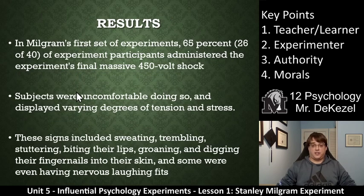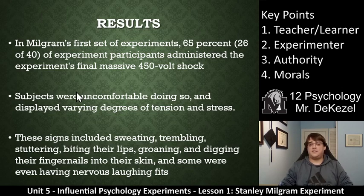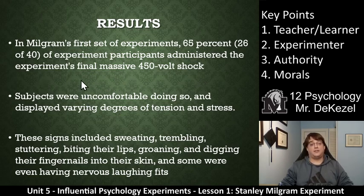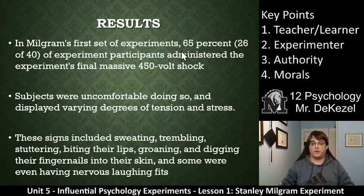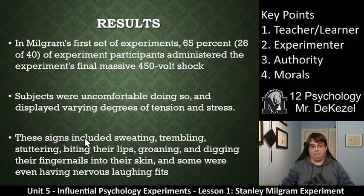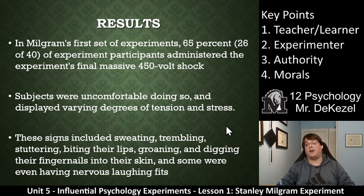So the results — what actually came of this? In Milgram's first set of experiments, 65%, or 26 out of 40 participants, administered the experiment's final massive 450-volt shock — this is after the learner was screaming for help, pleading not to be shocked anymore, and screaming in pain every time. Subjects were uncomfortable doing so and displayed varying degrees of tension and stress, including sweating, trembling, stuttering, biting their lips, groaning, digging their fingernails into their skin, and nervous fits of laughter, which are very common when someone is nervous.